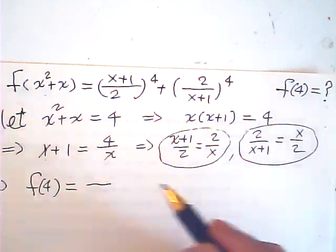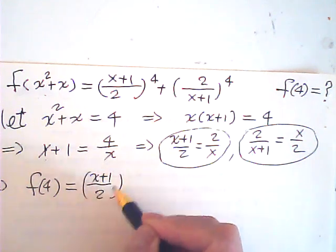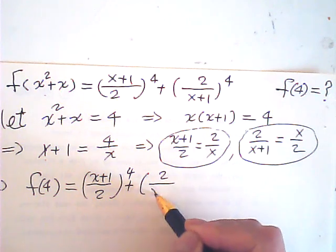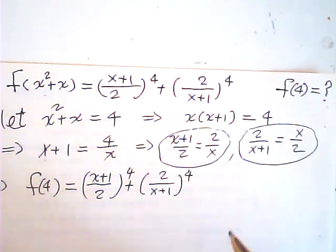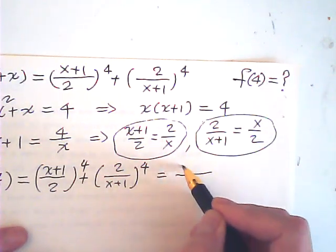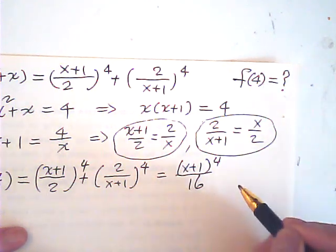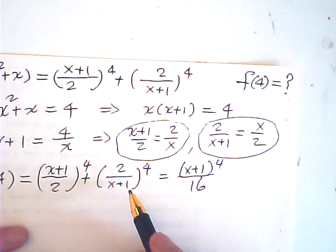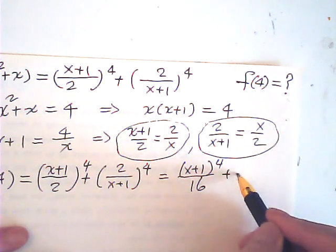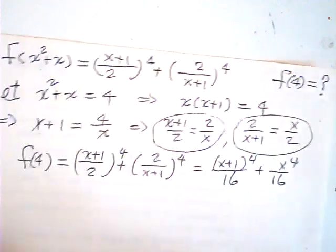Let me not jump too much. This is 4 plus 2 over (x plus 1) to the 4th power. So this is 4th power plus x to the 4th over 16.